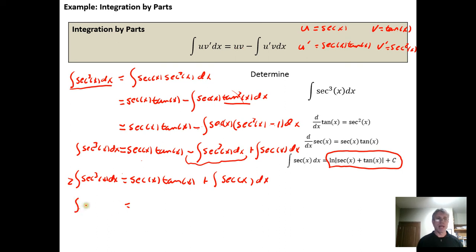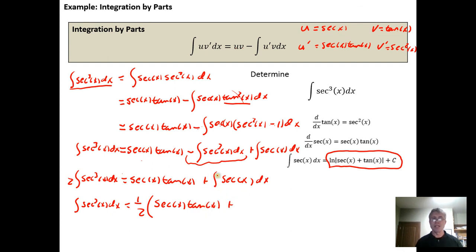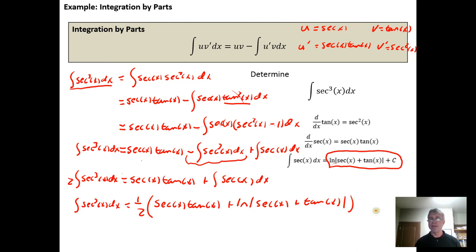Multiplying both sides by one half, we get the integral of the secant cubed of x dx equals one half of the secant of x times the tangent of x plus the antiderivative of the secant function, which is the natural log of the absolute value of the secant of x plus the tangent of x. This whole expression needs to be plus a constant of integration.